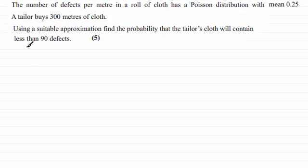So first of all, what I'd want to do is to define a random variable, and that random variable we'll call D. Let D be the random variable, and it's going to be the number of defects per 300 meters.